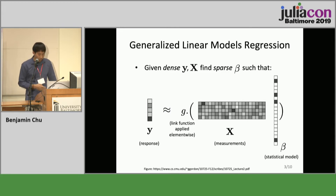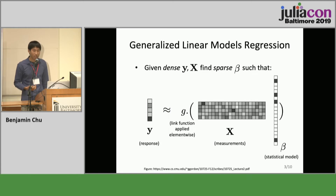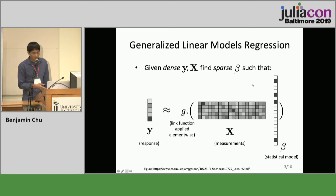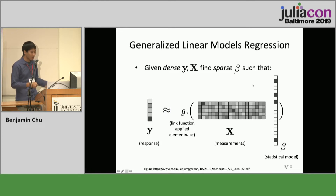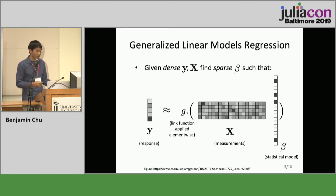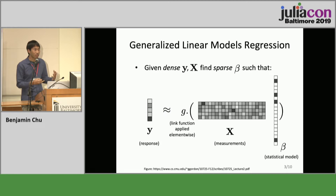That's what we mean when we say we want to estimate a sparse statistical model beta. You are given y, given x, and a non-linear function g, such that you want to find a sparse beta where y equals g(x·beta).